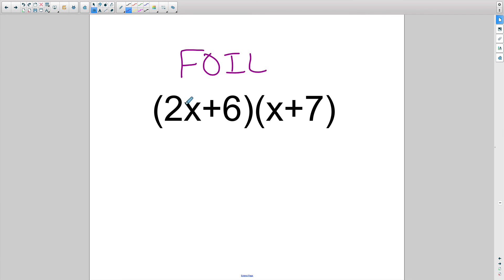We're going to do first, which is 2x times x, which is 2x squared. Then we're going to do the outer here, which is 2x times a positive 7. And that's going to be a positive 14x.